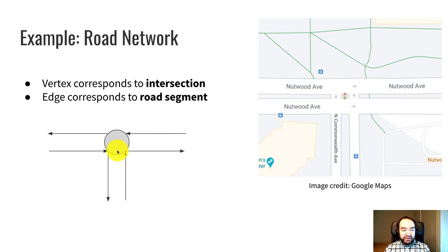So for example, this rightward-facing edge coming out of the vertex corresponds to eastbound traffic on Nutwood. The left-facing edge corresponds to westbound traffic on Nutwood. And the upward-facing edge corresponds to northbound traffic on Commonwealth Avenue.